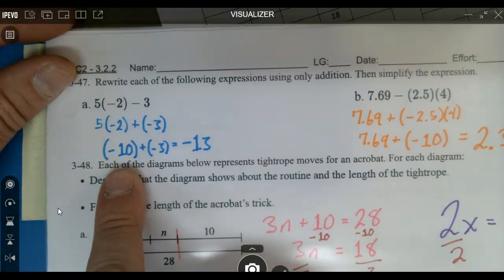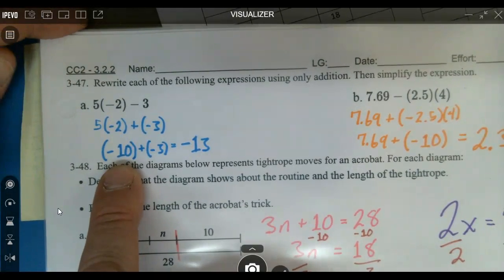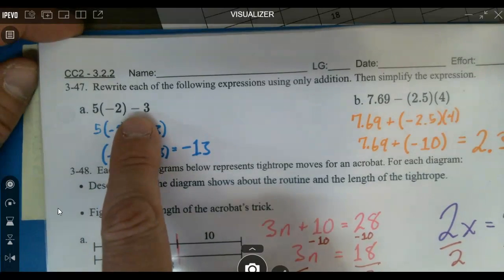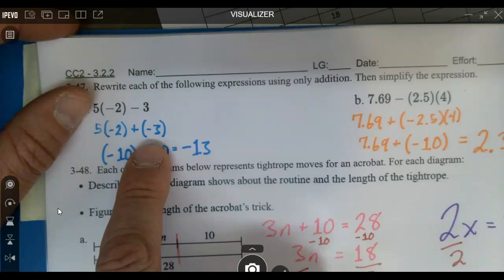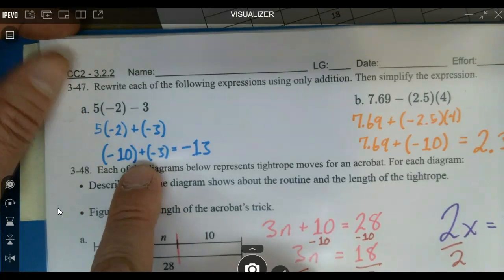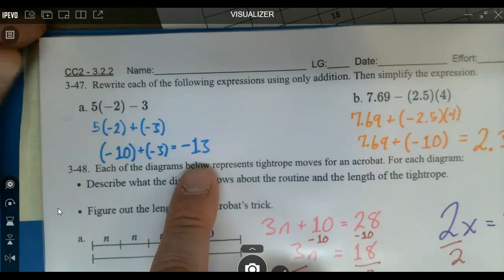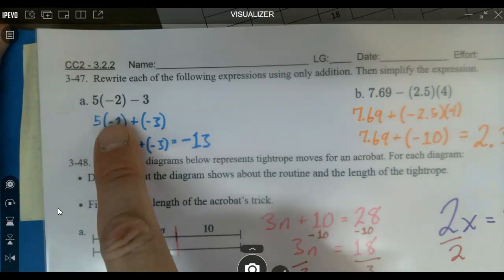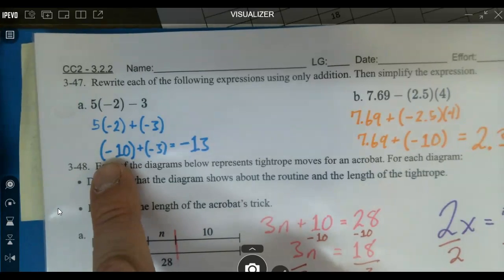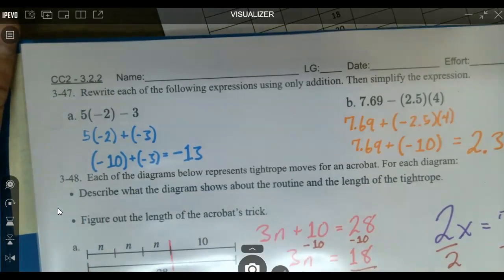That becomes negative 10. I have a crazy bias against subtraction, so I change it to plus the negative instead. Negative 10 and negative 3 team up to make a bigger bad guy because that was multiplication, which we're re-practicing today from yesterday's worksheet.